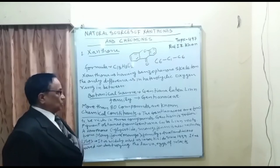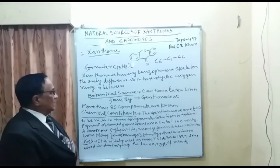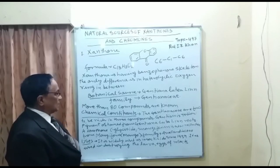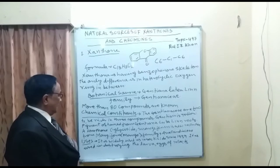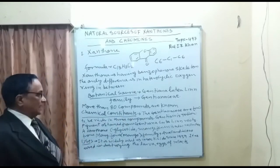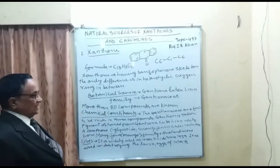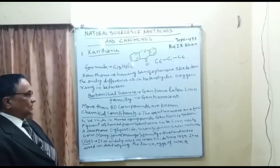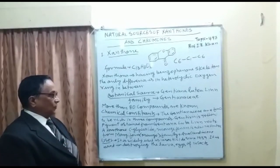The botanical source of xanthone is Gentiana lutea, which belongs to the family Gentianaceae. More than 80 compounds are known from this family. Gentianaceae is rich in xanthone, which is a yellow pigment obtained from the roots of Gentiana lutea.